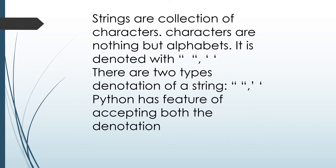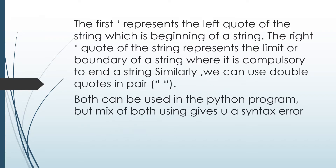So basically, what are strings? A string is a sequence of characters which mostly contains non-numeric characters, and they are denoted with double quotes and single quotes. Python recognizes both. The left quote of a string represents the beginning of the string and the right quote represents the end.